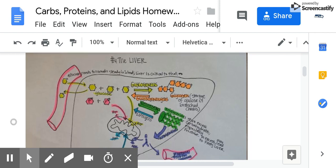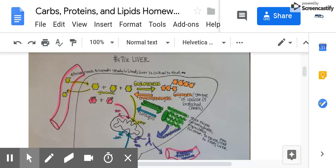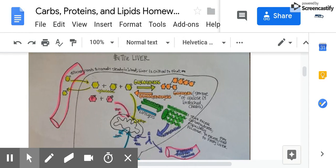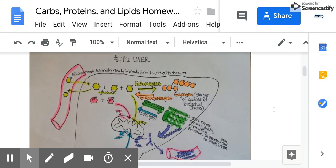The next part of your homework asked you to draw a liver and to consider the different processes that happen in the liver as far as carbohydrate metabolism, protein metabolism, and lipid metabolism. So please see here that we'll start with carbohydrates.